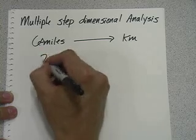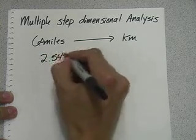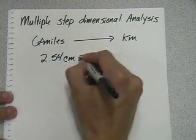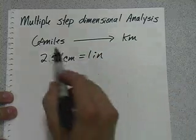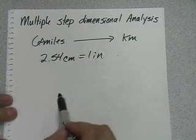Now we know that 2.54 centimeters equals one inch. Well, that doesn't help us to go directly, but we can do it in multiple steps.